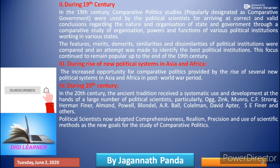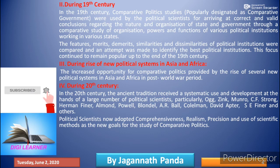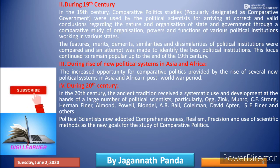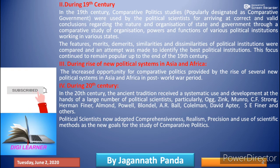During the 20th century, the ancient tradition received systematic use and development at the hands of a large number of political scientists, particularly Ogg, Zink, Munro, C.F. Strong, Hermann Finer, Almond and Powell, Blondel, A.R. Ball, Coleman, David Apter, S.E. Finer, and others. These political scientists developed comparative politics during the 20th century. Political scientists now advocated comprehensive realism, precision, and use of scientific methods as the new goal for the study of comparative politics.